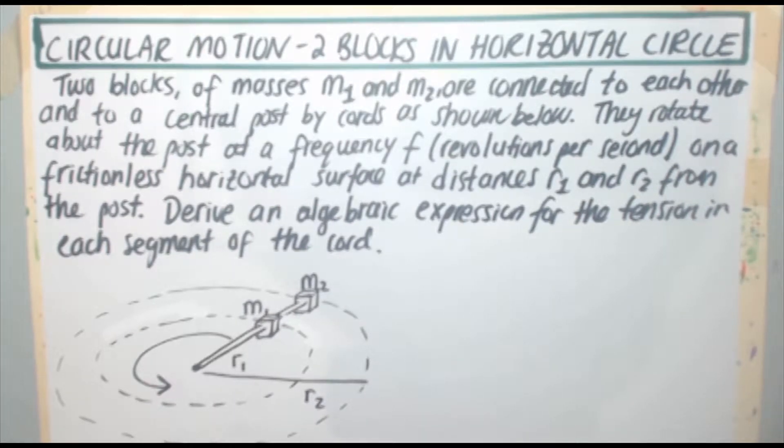Two blocks of masses m1 and m2 are connected to each other and to a central post by chords as shown below. They rotate about the post at a frequency f revolutions per second on a frictionless horizontal surface, distances r1 and r2 from the post. Derive an algebraic expression for the tension in each segment of the chord.